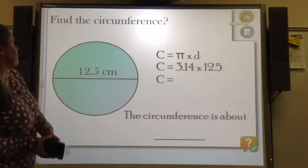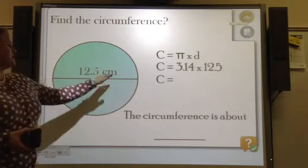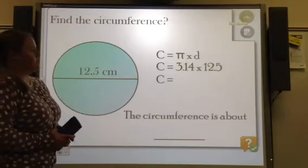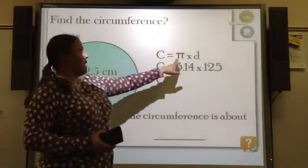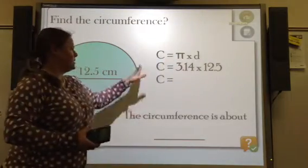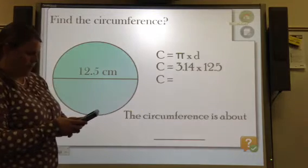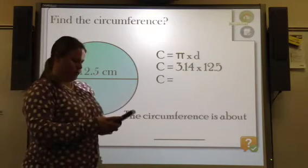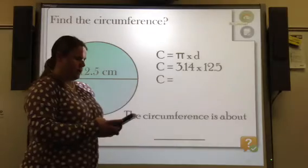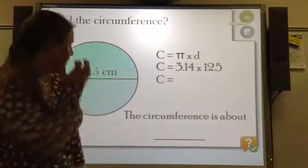The next problem says find the circumference, given that the diameter is 12.5. So again, circumference equals pi times D. Circumference equals 3.14 times 12.5, and that equals 39.25.